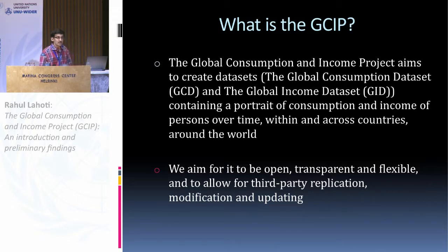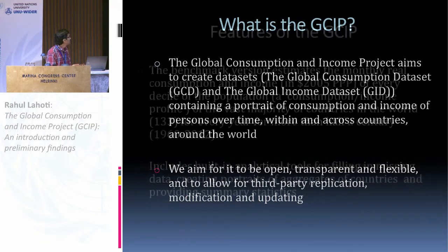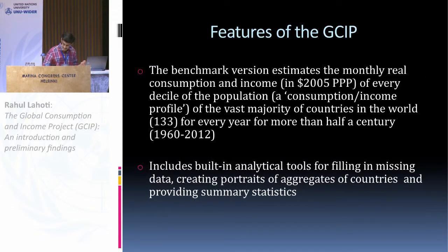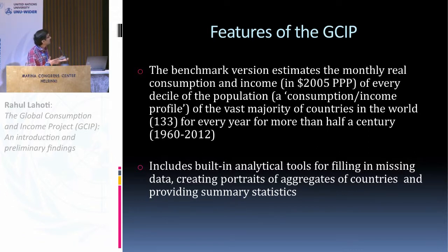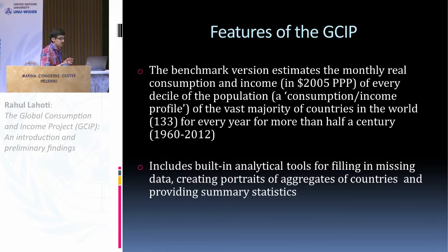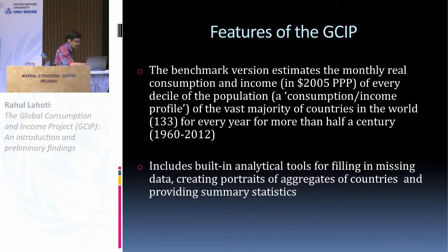Our main goal to start the project was to be open and transparent. We want to provide both the code as well as the data so that it is replicable, and people can change our methods, use alternative assumptions and see how it looks. The benchmark database currently gives us a consumption profile and a separate income profile from 133 countries spanning the last half century, from 1960 to 2012. We have built-in tools for filling in missing data as well as creating portraits for aggregates of countries — a user can create an aggregate for any group they want.